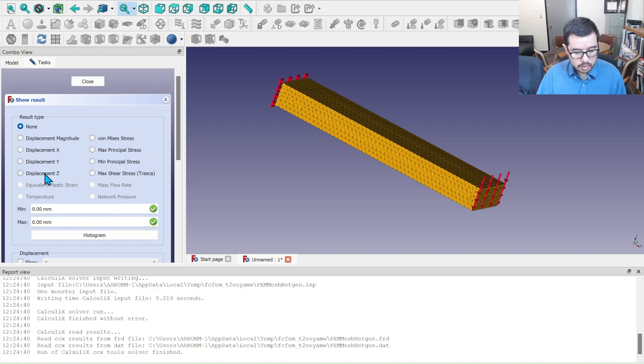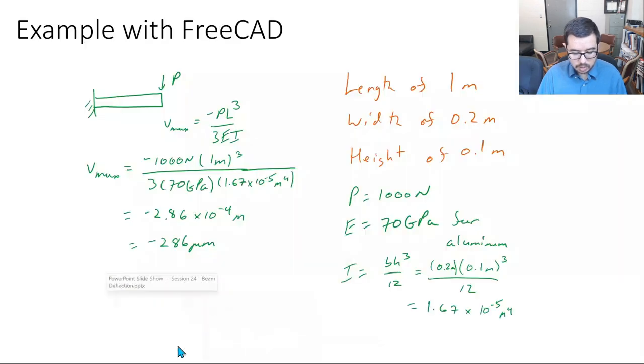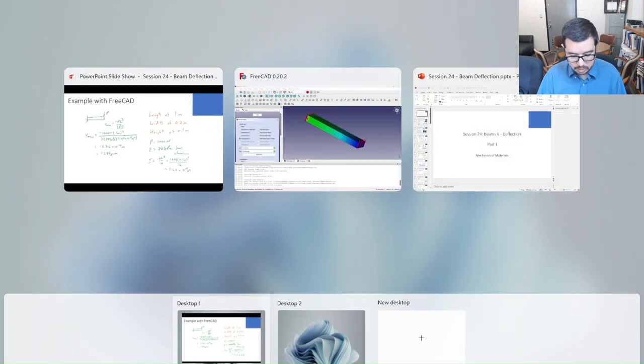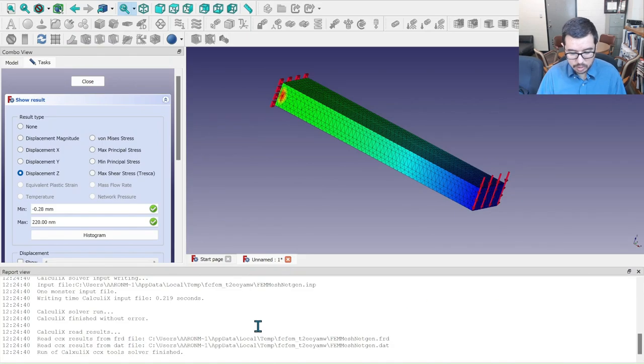One is let's first take a look at displacement. What did we say that we were dealing with before? We were dealing with a system that would have displacement of minus 290 micrometers. So what did what did FreeCAD tell us or CalculiX through FreeCAD? Look at this minus 0.28 millimeters. That's awesome. It's very close.